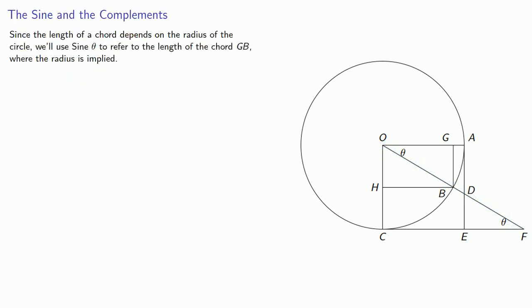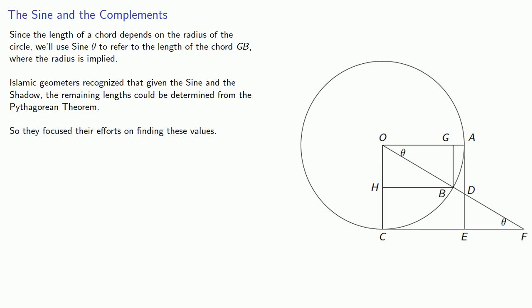Since the length of a chord depends on the radius of the circle, we'll use capital SINE theta to refer to the length of the chord GB, where the radius is implied. Islamic geometers recognized that given the SINE and SHADOW, the remaining lengths could be determined from the Pythagorean theorem, so they focused their efforts on finding these values.